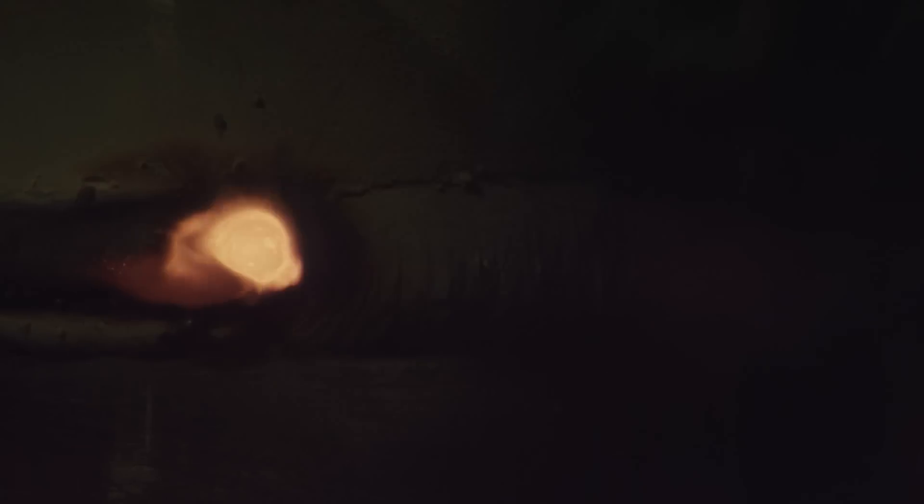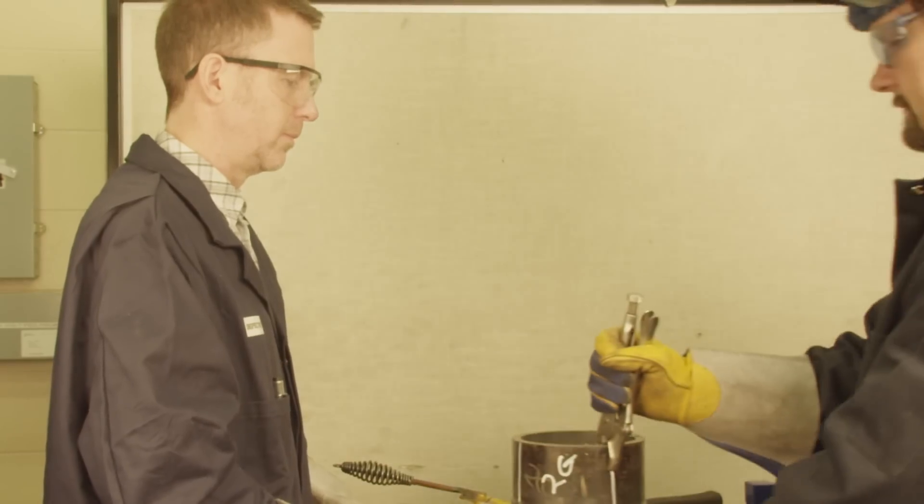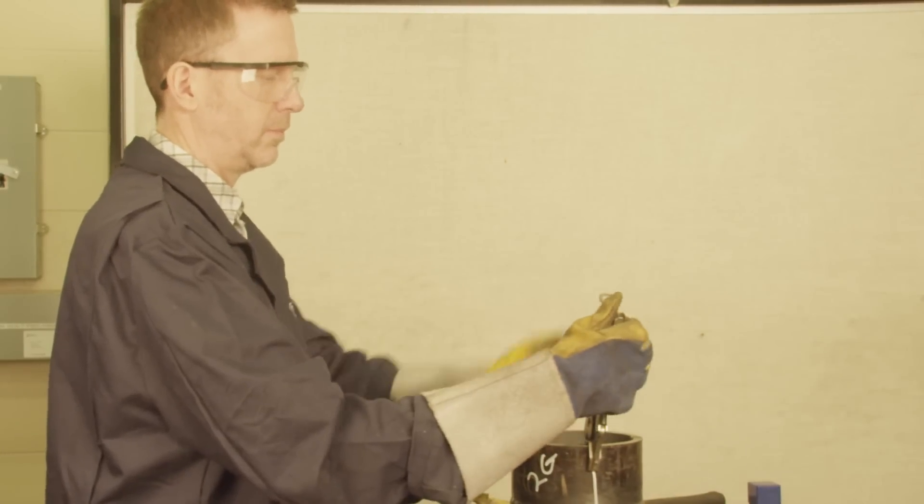After completing the cap passes, clean off the slag and smoke residue from the inside and out using a wire brush and chipping hammer. No filing or grinding is permitted on the finished weld. Present again to the safety codes officer.